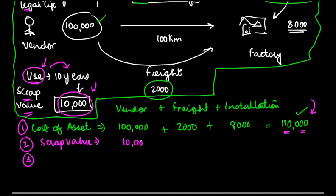Now what does this mean? This means when I buy the asset, I pay 1 lakh 10,000. When I sell the asset, I will get 10,000. So how much is the total cash outflow or total expense for me? It's obviously 1 lakh 10,000 minus 10,000, or 1 lakh.